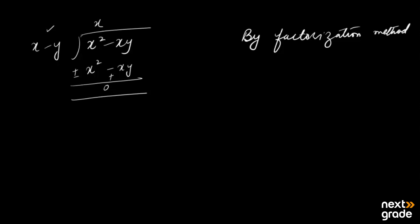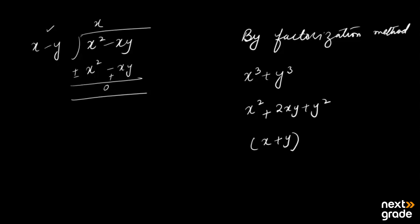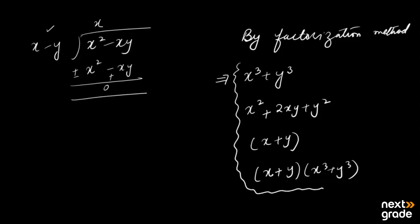It is also possible that a question demands more than three polynomials. For example, if you are given x³+y³, x²+2xy+y², x+y, and x³+y³ — four expressions in the same question — you factorize all of them. Note that prime factorization is for numbers; here we do simple factorization. Whatever common factor appears among all of them is the HCF. In the next lecture, we will practice questions related to the factorization method in algebraic expressions.